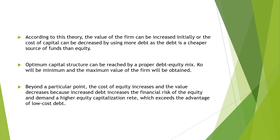Interest is cheaper than the cost of equity, which is the dividend — that is the cost of equity versus the cost of debt. Initially, when debt is used, the value of the firm increases and the cost of capital decreases. The cost of capital can reach a minimum by a proper debt-equity mix, and at that point, the maximum value of the firm will be obtained.